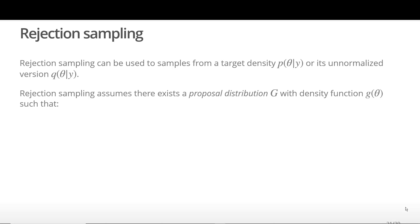Rejection sampling is a popular stochastic method for approximating a posterior distribution. It can be used to draw a sample from a target density P, or its unnormalized equivalent Q.